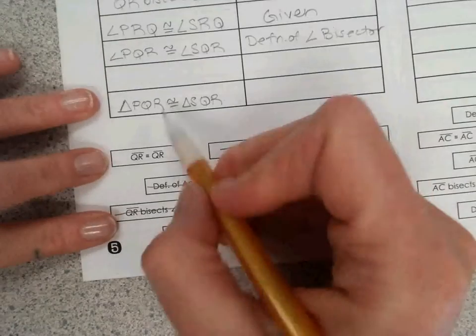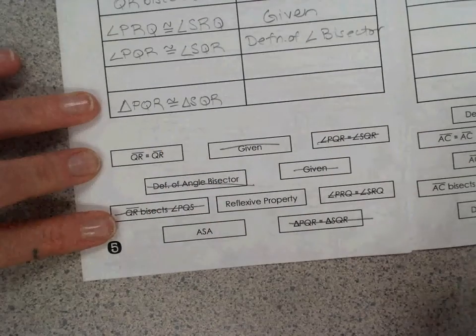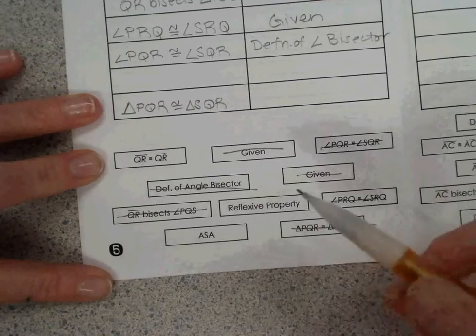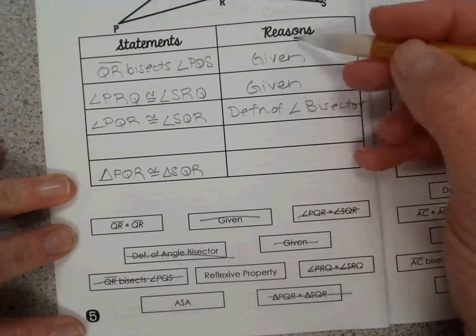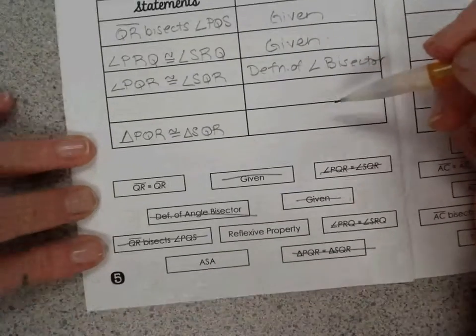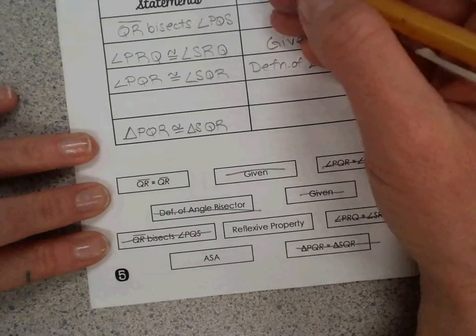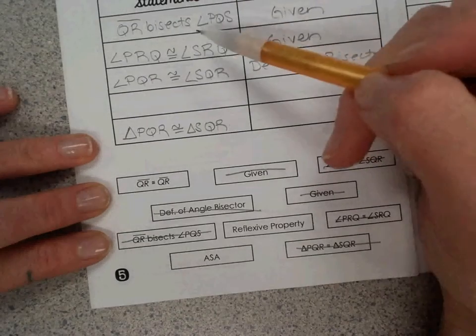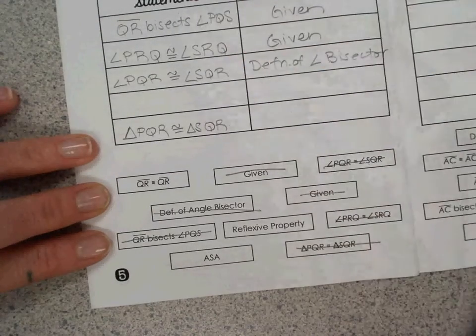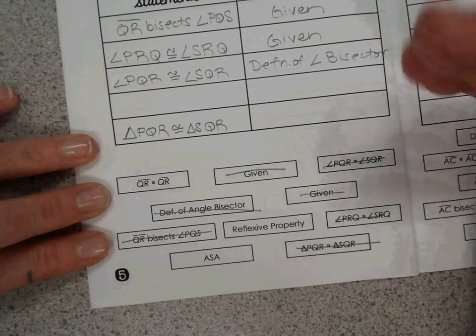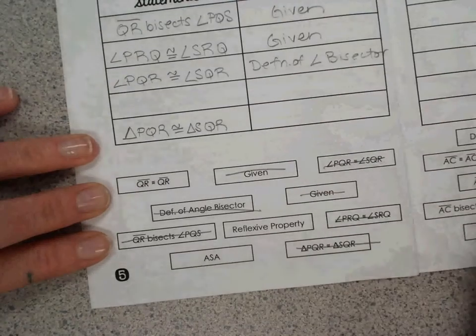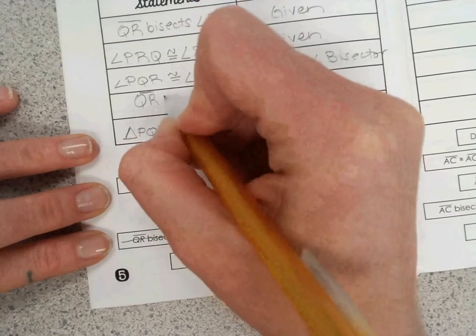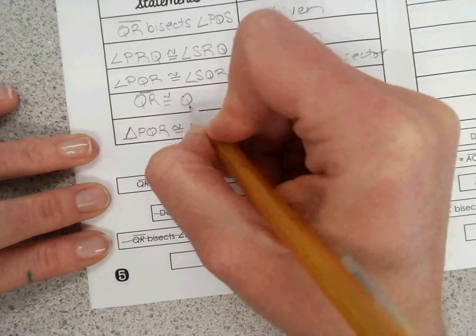And then I can come back up and fill in the other option that makes sense as a statement. Our properties and theorems typically go on the right-hand side. And our statements of congruence for these types of problems or proofs, or we might include words like bisect, those kinds of things go on the left side of statements. So QR is congruent to QR.